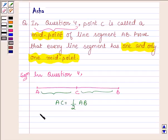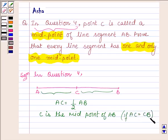That is, C is the midpoint of AB if AC is equal to CB.